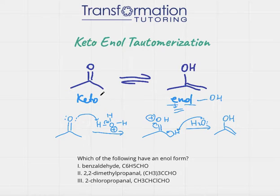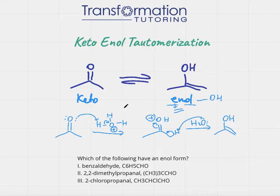The keto form can be converted into the enol form under acidic conditions, or it can be converted to the enolate form under basic conditions. In this case we will do keto-enol tautomerization under acidic conditions, so let's go ahead and see the mechanism.